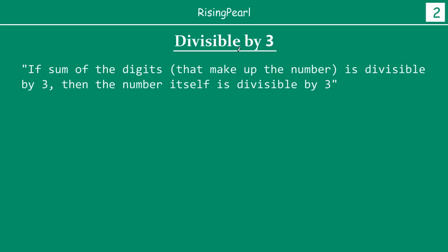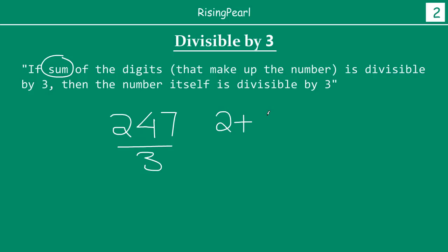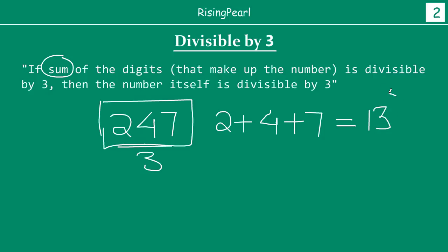How do we know divisibility by 3? In order to know if a number is divisible by 3, we add the digits that make up the number, and we see if the sum of all those digits is divisible by 3 — then the whole number itself is divisible by 3. Let's take an example: 247. Is this number divisible by 3? We add: 2 plus 4 plus 7. So 2 plus 4 is 6, plus 7 is 13. Since 13 is not divisible by 3, we can tell 247 is not divisible by 3.